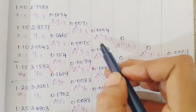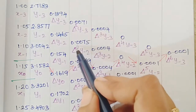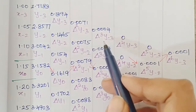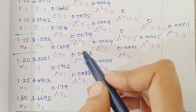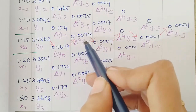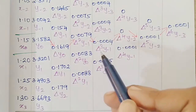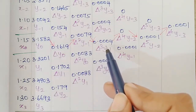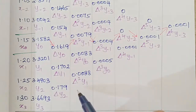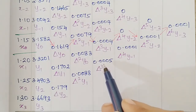Now computing third differences: δ³y₋₃ = δ²y₋₂ minus δ²y₋₃ = 0.0075 minus 0.0071 = 0.0004. δ³y₋₂ = δ²y₋₁ minus δ²y₋₂ = 0.0079 minus 0.0075 = 0.0004. δ³y₀ = δ²y₁ minus δ²y₀ = 0.0088 minus 0.0083 = 0.0005.